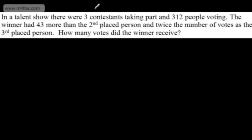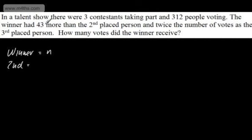In a talent show, three contestants took part and 312 people voted. The winner had 43 more votes than second place, and twice the number of votes as third place. How many votes did the winner receive? Let the winner have N votes. Second place had N minus 43 votes. Third place had half of N, or N over 2.